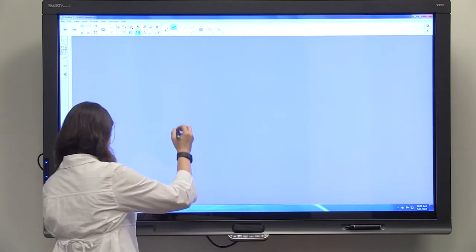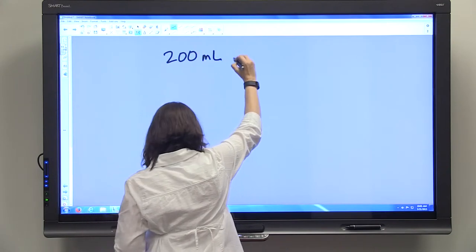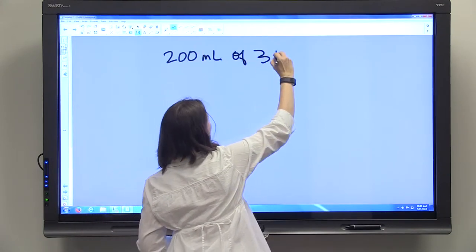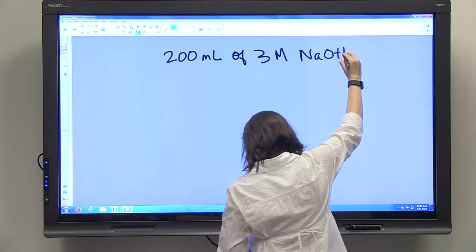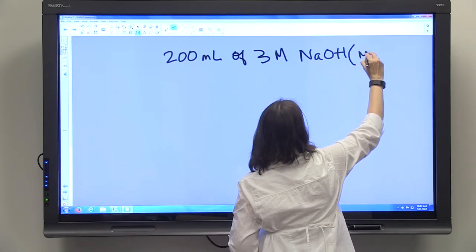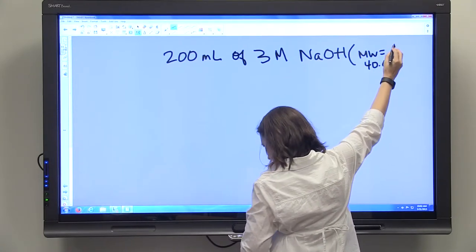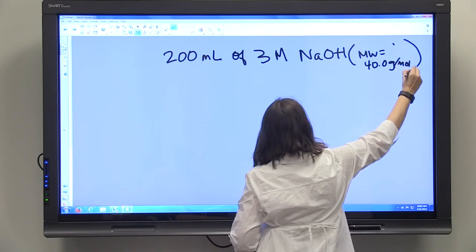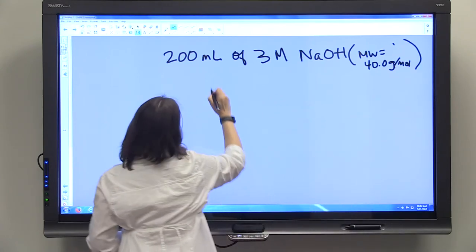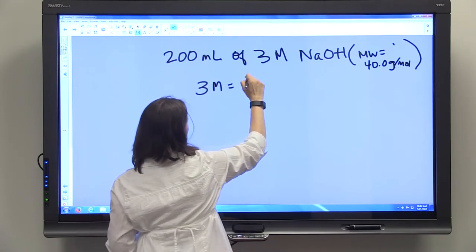Let's do a quick one with a molar solution. We want to do 200 mL of a 3 molar sodium hydroxide, which has a molecular weight equal to 40.0 grams per mole. We know that our 3 molar equals 3 moles per 1 liter.